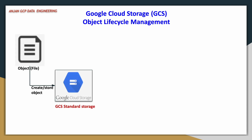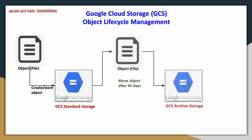In the demo, we will create a bucket, place an object or file in it, and also try to configure the object lifecycle management conditions and rules. There are actually two things we will see: one is for deleting and one is for moving the object from one storage class to another — for example, from standard storage to archive — and also deleting that object after 200 days. This is one simple example.